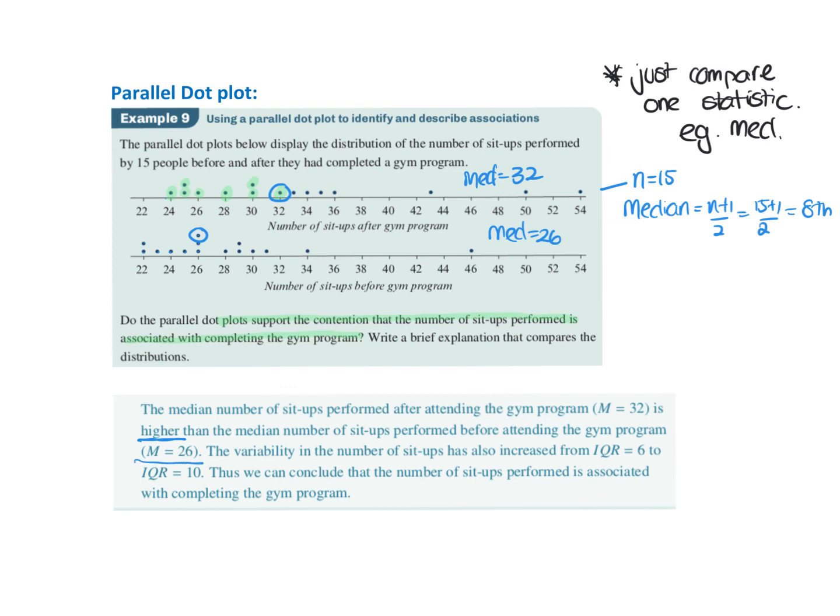So we could say therefore, even at this point, you could then just go to we can conclude that the number of sit-ups performed is associated. They've just put here with this next one, this is just another fact you could use that the IQR increased. But the median is probably the easiest one with a dot plot, easiest to find.